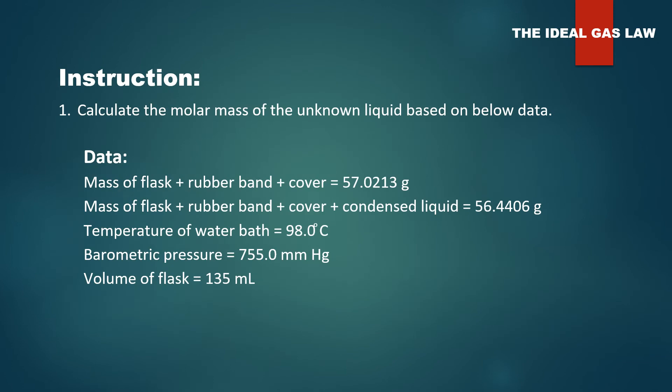This means that knowing the temperature T1 and the volume V1 of gas, we can calculate its volume for any other temperature. Notice that doubling the absolute temperature doubles the gas volume. Next, part B, the ideal gas law. So, this part you need to calculate the molar mass of the unknown liquid based on the below data. You just follow the data and then try to apply the formula PV equal to nRT to find out the molar mass.